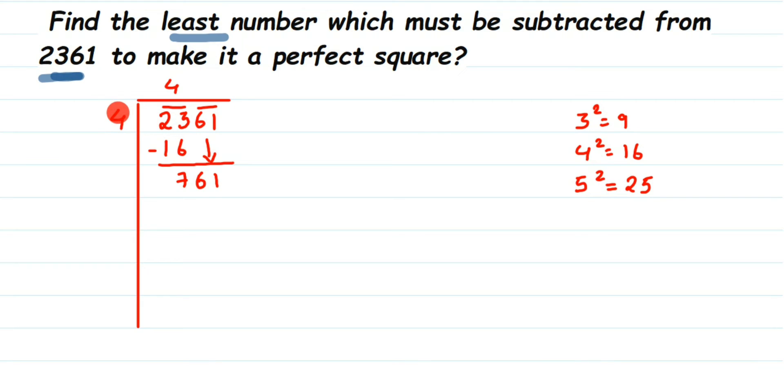Now how to find out the divisor for this step? It's a very important step here. For the first step, you have to take the perfect square number closer to it and then take it. But in second step, whatever quotient you have here, the quotient is 4, so I have to take double of the quotient. So 4 plus 4 is 8. So I'll take 8 here. Four plus four is eight. Now this is only one part of the divisor.